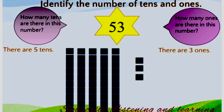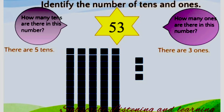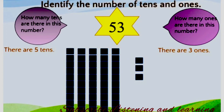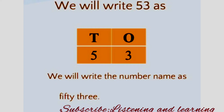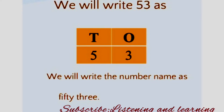Here, identify the number of tens and ones. How many tens are there in this number? You can count the number of blocks here. Each block contains 10 ones. Counting the blocks: 1, 2, 3, 4, 5. In number 53, there are 5 tens. 5 tens are 50. Then how many ones are there? Counting: 1, 2, 3. There are 3 ones in this number. So in number 53, there are 5 tens and 3 ones. Under the ones place we write 3 and under the tens place we write 5.